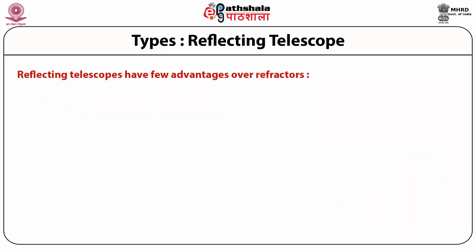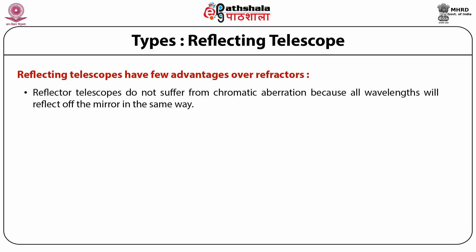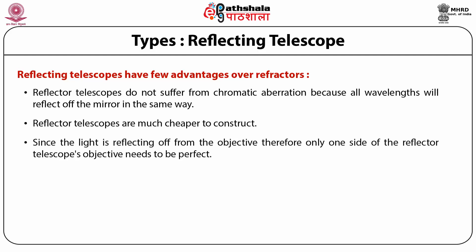Reflecting telescopes have a few advantages. First, reflecting telescopes do not suffer from chromatic aberration because all wavelengths reflect off the mirror in the same way. Second, reflecting telescopes are much cheaper to construct. Third, since the light is reflecting off the objective, only one side of the reflecting telescope's objective needs to be perfectly shaped.